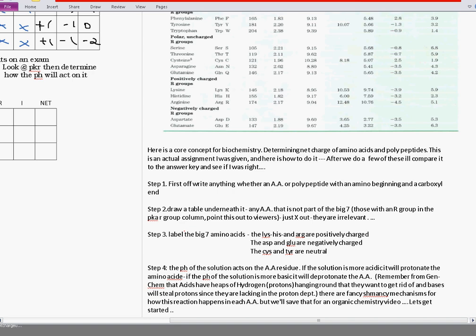Step 3. Label the big seven. The lysine, histidine, and arginine are positively charged. The aspartate and glutamate are negatively charged. The cysteine and the tyrosine have neutral R groups.